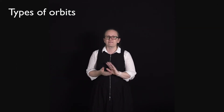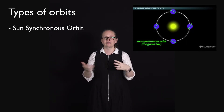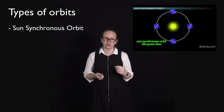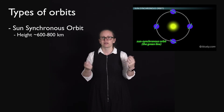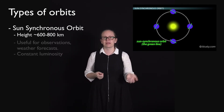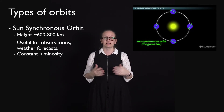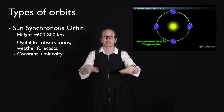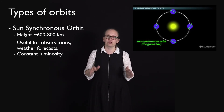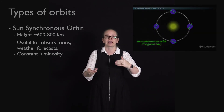We also have sun-synchronous orbits, which as the name suggests are synchronized with the Sun. These are typically at altitudes of 600 to 800 kilometers. They're useful for observing the earth and for weather forecasting. What's helpful with these is that when you're looking at the earth from such an orbit you have the same amount of illumination from the Sun at every point that you're looking at.